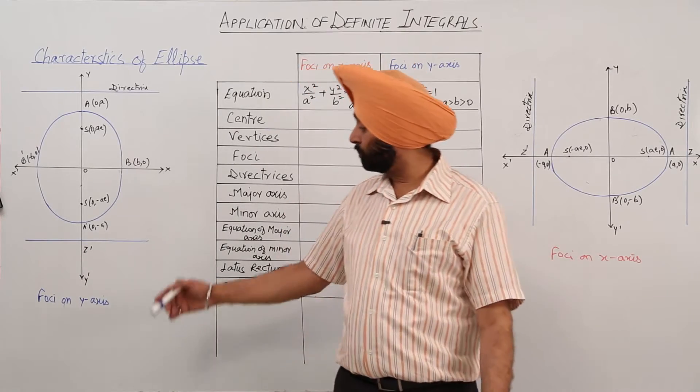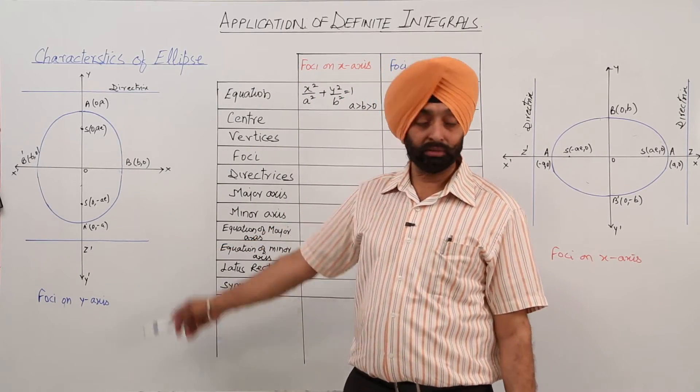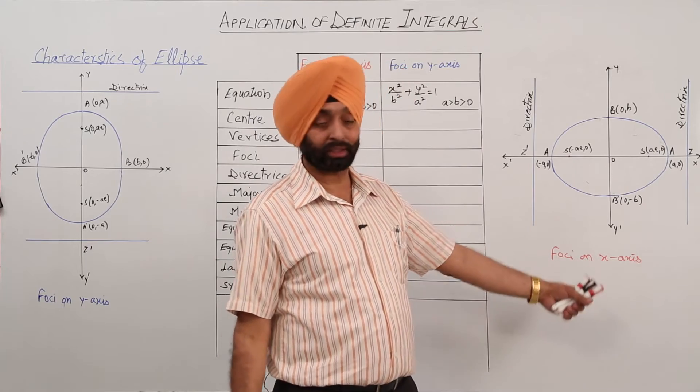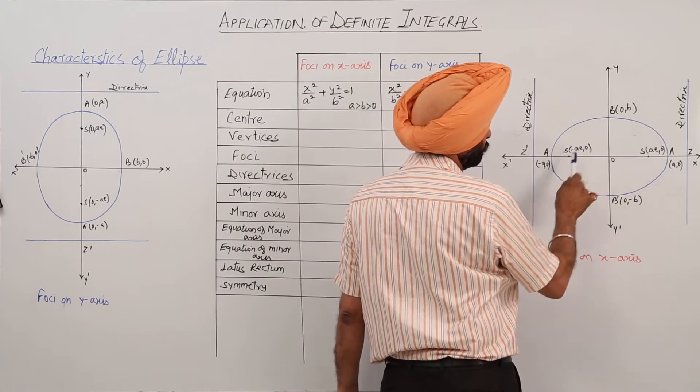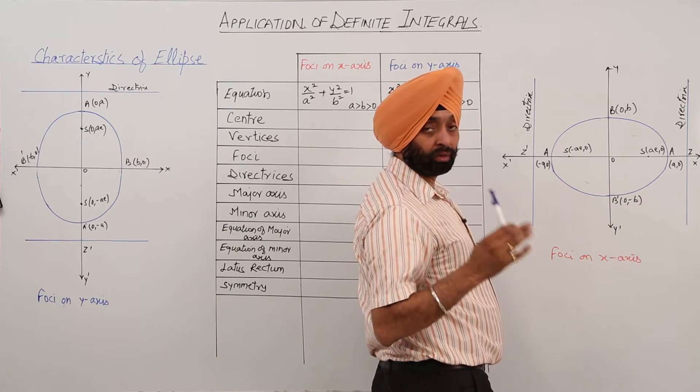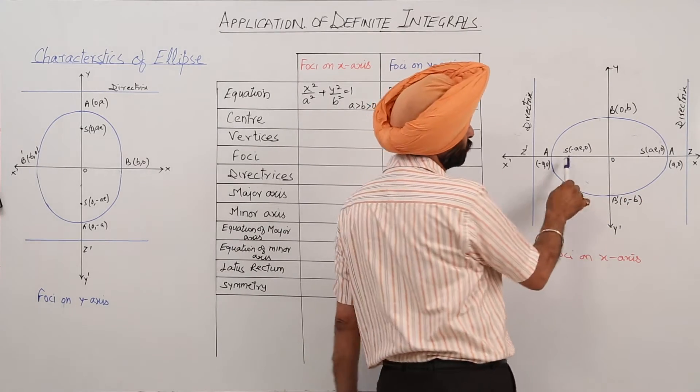Characteristics of ellipse: foci on the y-axis and foci on the x-axis. Again, here these two are the directrix, two foci—that's why we are getting foci, not focuses. We will say foci, two foci.